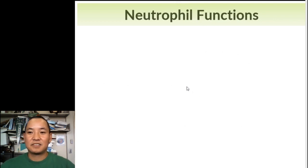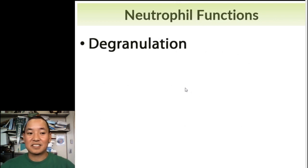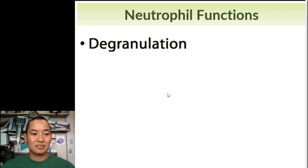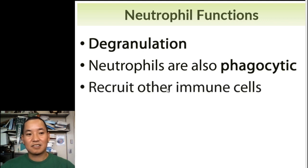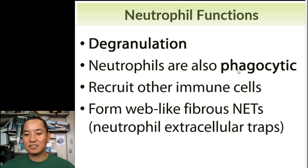So neutrophil functions: degranulation is the release of toxic chemicals into the environment, and they're not only toxic to pathogens — they're also toxic to your own cells with sufficient quantity or long enough exposure. Neutrophils are also phagocytic, so they're able to eat pathogens as well. They're also important in recruiting other immune cells, and they form something called NETs — neutrophil extracellular traps.